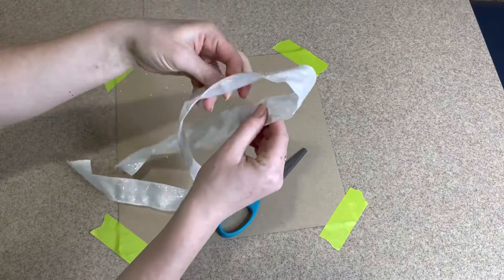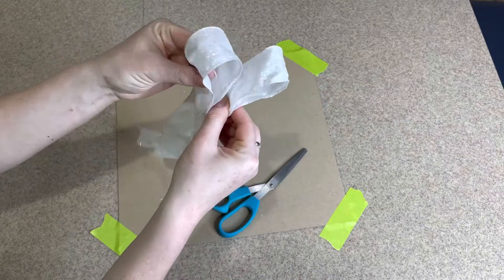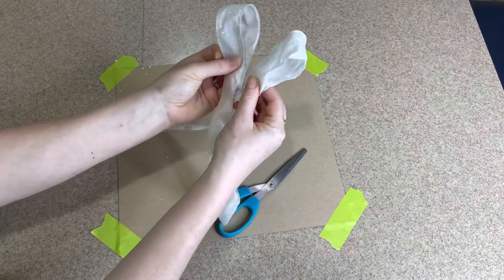Once you've done that, you're going to loop each side and loop the other side and tie them together like a knot.